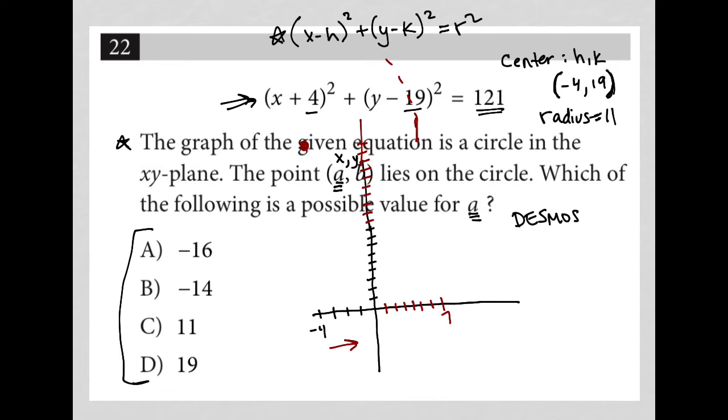So my circle would look something like this, where I would know that this distance is 11, and this distance is 11, right? So I'd go all the way out to negative 15 here.